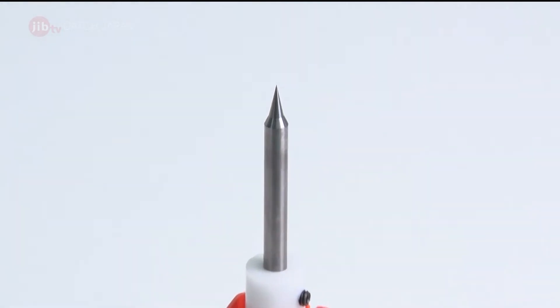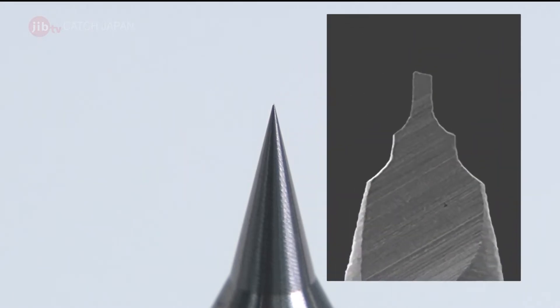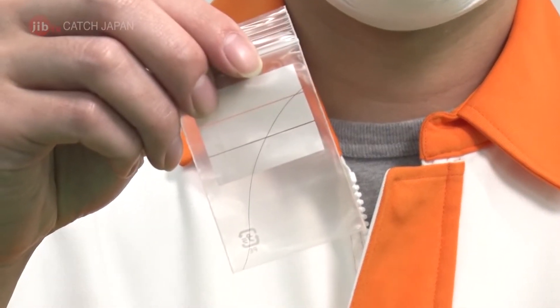Narrowing focus on their specialty even further, they created the world's smallest end mill to be used in mass production at just 0.01mm. Its tip is so small, it can only be seen with a microscope. It can even be used on a human hair.